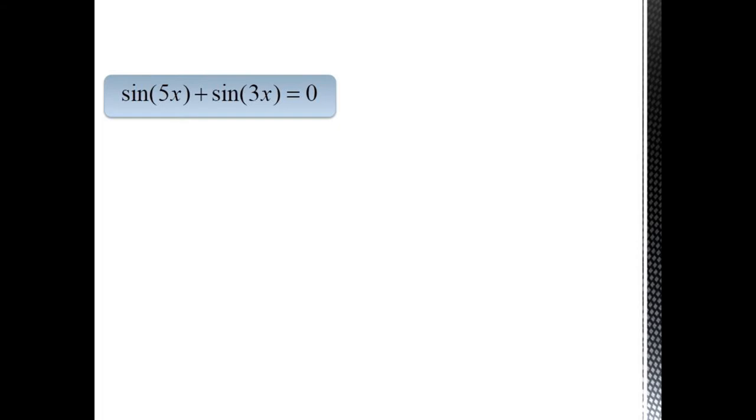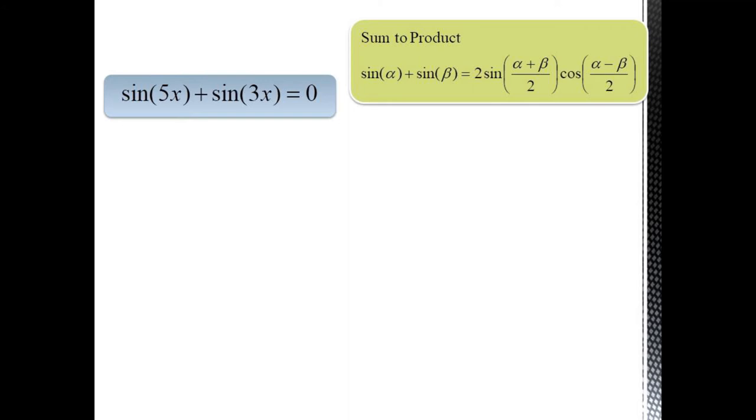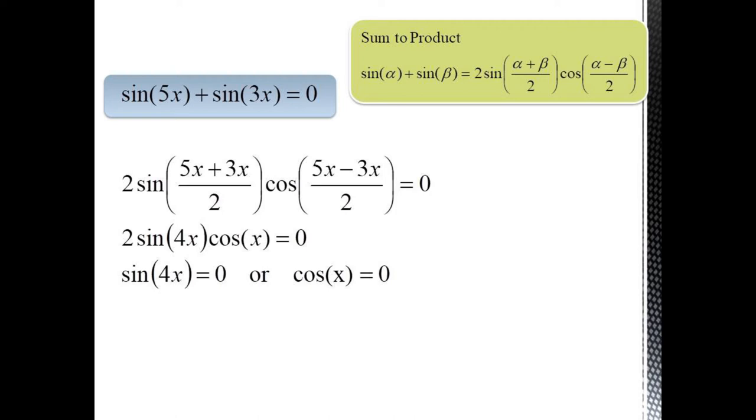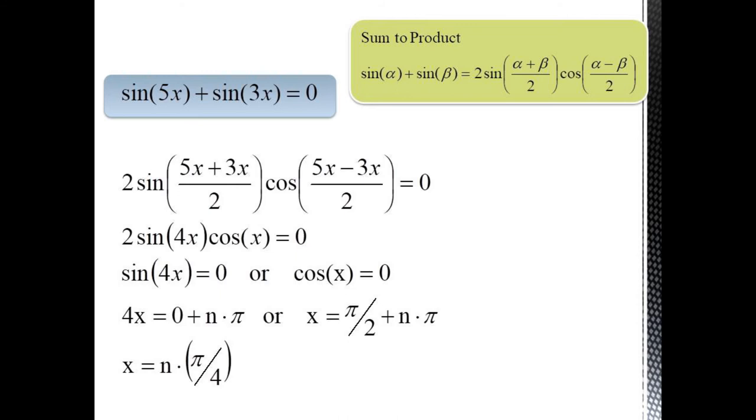Here's another equation which is best solved using one of our identities. Sine of 5x plus sine of 3x equals 0. In this case, we can use our sum to product formula to convert this into a product. We get that the sine of 5x plus sine of 3x equals 2 times the sine of 8x over 2 times cosine of 2x over 2 which equals 2 times the sine of 4x times the cosine of x. Since this product equals 0, we can break it apart as sine of 4x equals 0 or cosine of x equals 0.